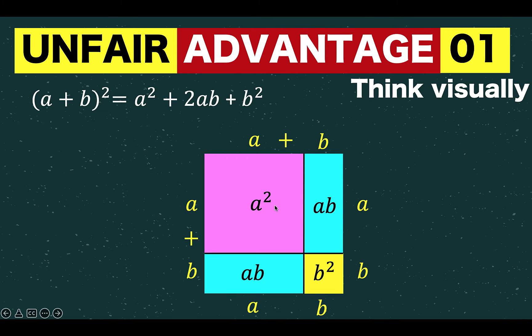That is equal to these four distinct parts. The first part is this pink square with an area of a squared. The other part is this yellow square with an area of b squared, and then you have two rectangles with an area of ab. And so ab plus ab is equal to 2ab.